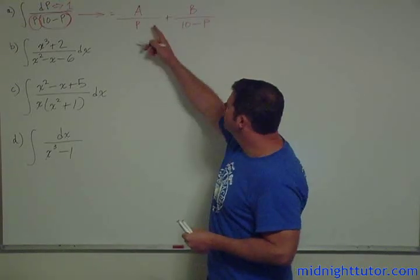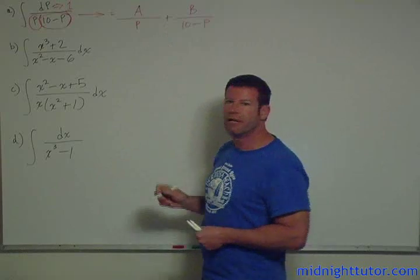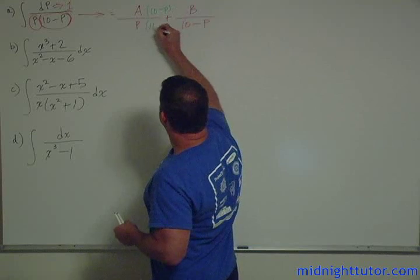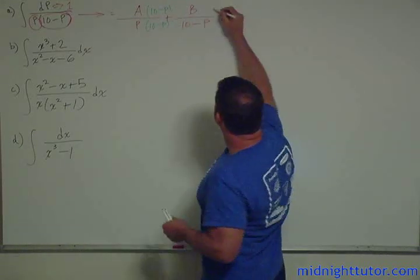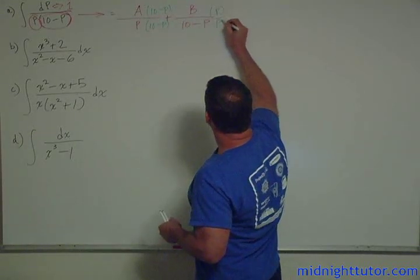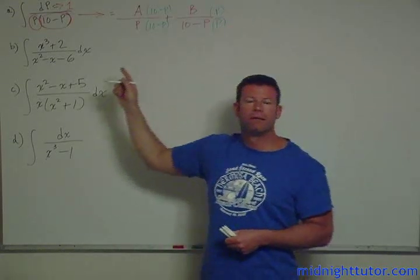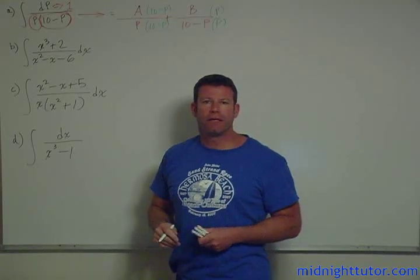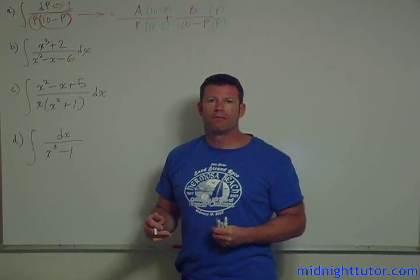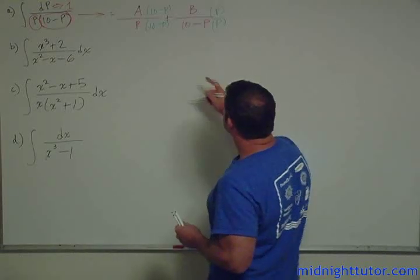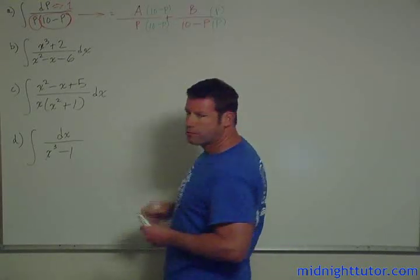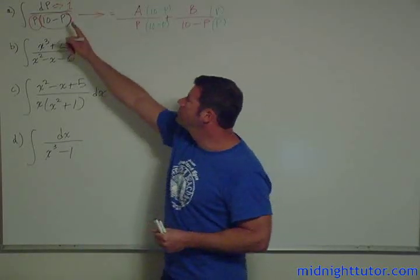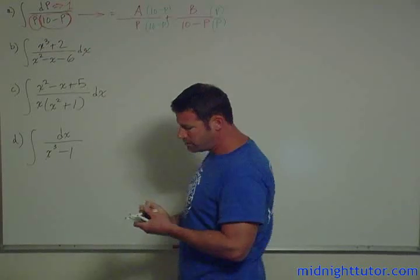We're going to now go through the process of getting the common denominator. This whole thing, we're going to multiply by 10 minus p, top and bottom. And this thing we're going to multiply by p. As long as I multiply by 1, I haven't changed the value of anything, I haven't violated any of the rules of calculus. So we're going to go through and do this cross multiplication. And then what we want is we want the numerator to come out to 1. So this gives us then an equation.